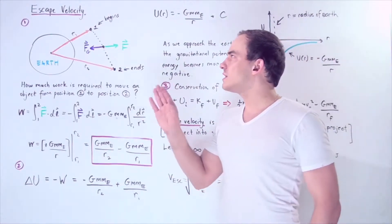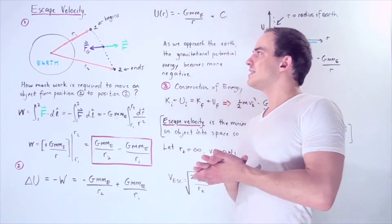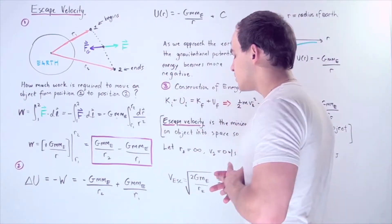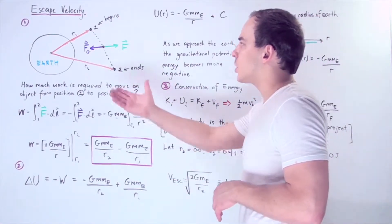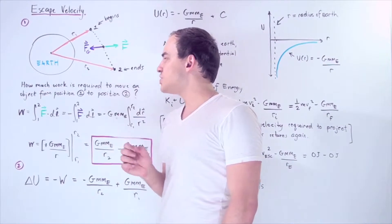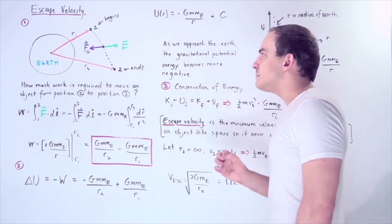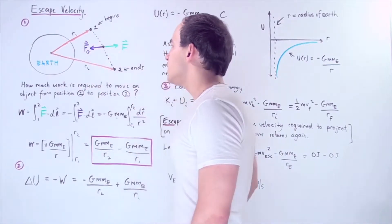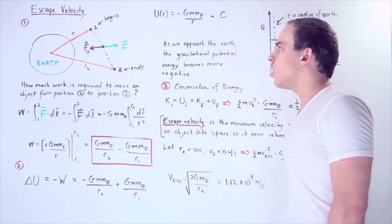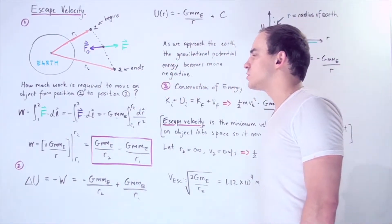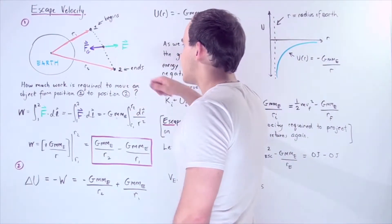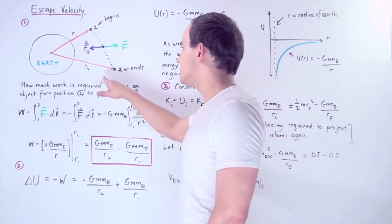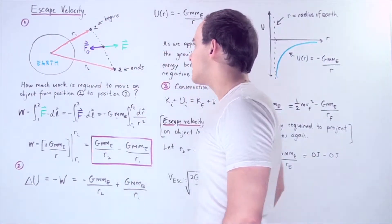Before we define what escape velocity is and before we calculate it, let's look at the following situation. We have the Earth and a spaceship with mass M that begins at location 1, a distance of R1 from the center of the Earth. Our spaceship wants to travel along the dashed pathway to position 2, a distance of R2 from the center of the Earth.